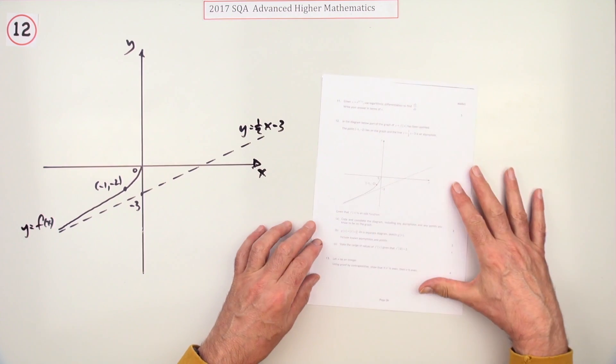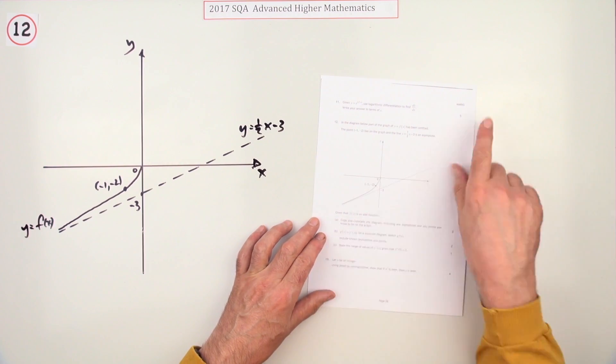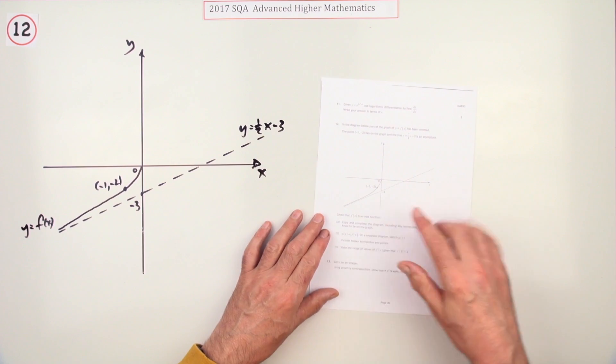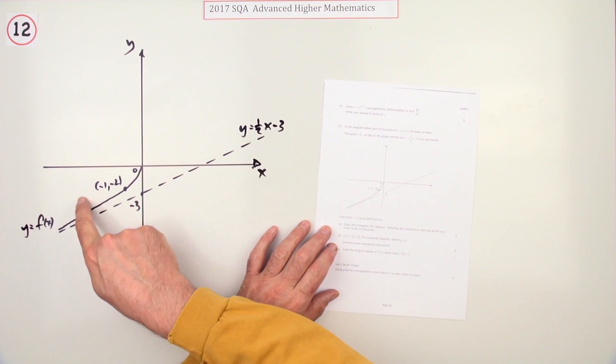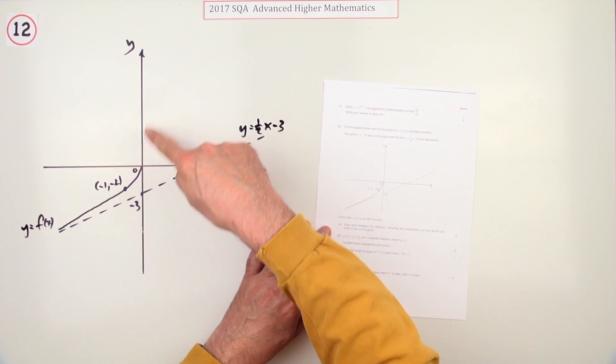Number 12 from the 2017 advanced diagram. Here we go. There's that graphs question for five marks. There's a diagram and it says part of this graph has been omitted. What's this bit?